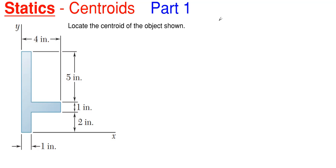A centroid will be made up of two coordinates when you are in a 2D situation. You will have your X centroid, which is just X-bar, and you will have your Y centroid, which is essentially Y-bar. Now there are multiple different ways that you can determine these.